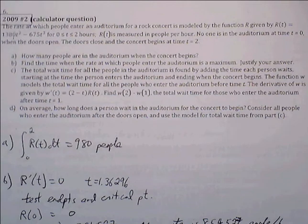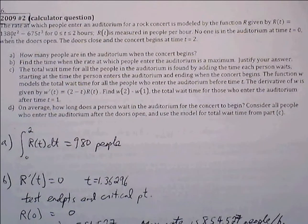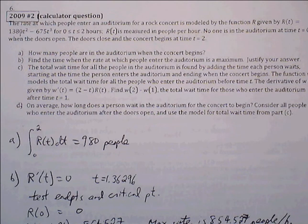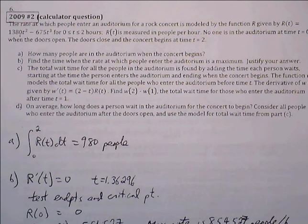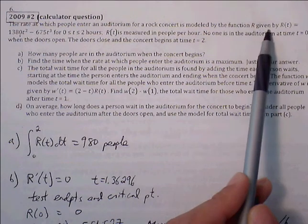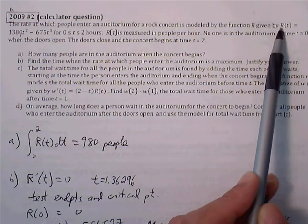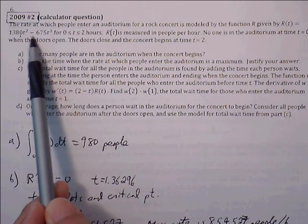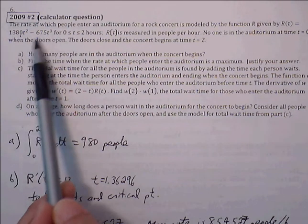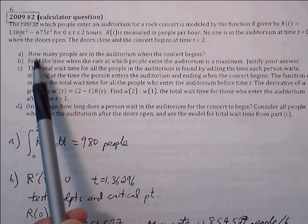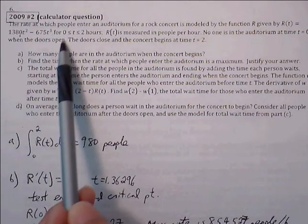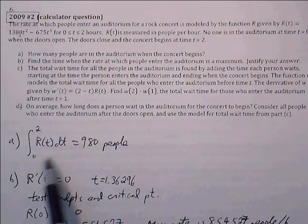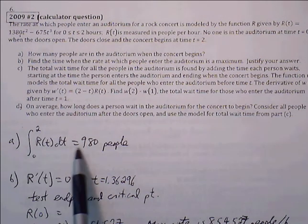Part A: How many people are in the auditorium when the concert begins? The concert begins at two hours, at t equals 2. We have to accumulate this rate from 0 to 2, since this is only people per hour. If you accumulate people per hour over the course of two hours from 0 to 2, we can use definite integrals to find that for us. The definite integral from 0 to 2 of R of T would be 980.